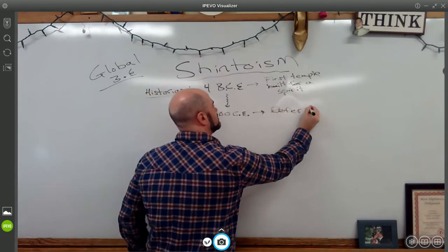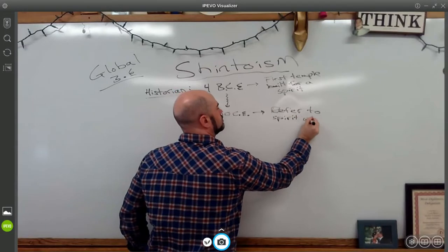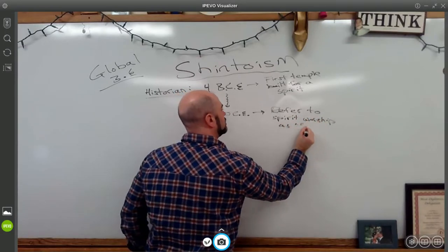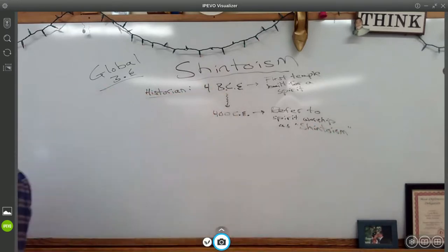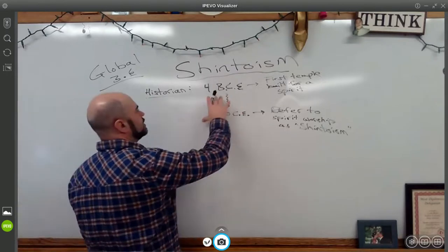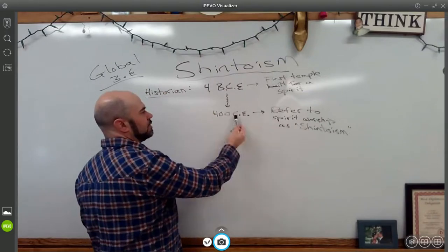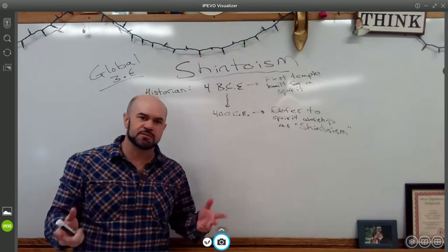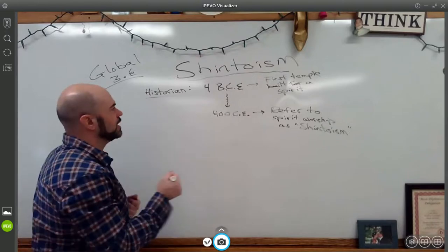By about 400 Common Era, this is when the Japanese start to refer to the spirit worship as quote unquote Shintoism. Over about a 400 year time period, the Japanese start to expand and extend their worship of these spirits, and by about 400 Common Era they start to refer to the worship of these spirits as Shintoism.